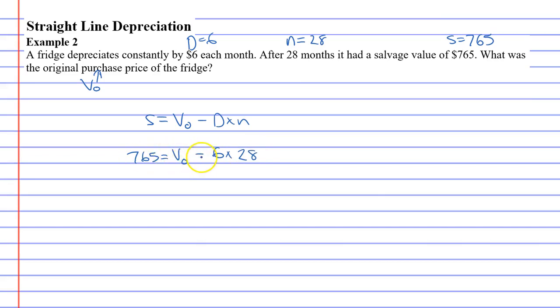So if we're going to work this out, we're going to have to use the rules we use to solve equations. But first let's simplify it a bit. Let's do 6 times 28. And that gives me 168. So 765 equals V0 minus 168.